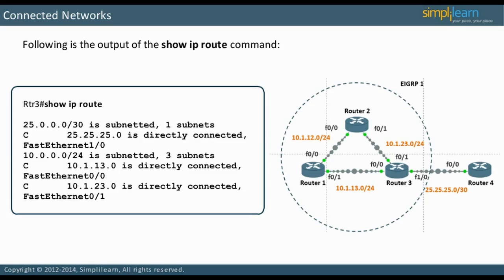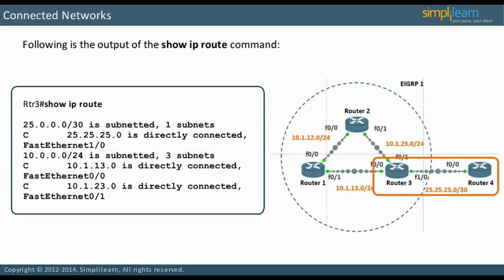There are three routes in the routing table. The first route, 25.25.25.0, is directly connected to FastEthernet 1.0. Because 25.25.25.0 does not have a different prefix length specified, it uses the prefix length of the classful network, so its prefix length is /30. The 'C' to the left of the route shows that it is a directly connected network, and the interface is the outgoing interface to reach a destination in the 25.25.25.0/30 subnet.